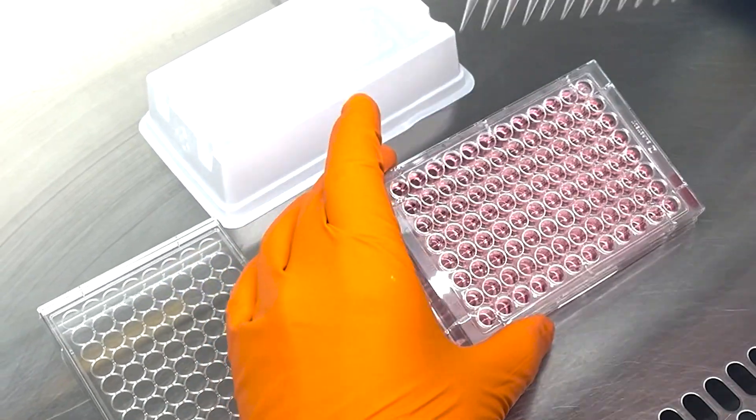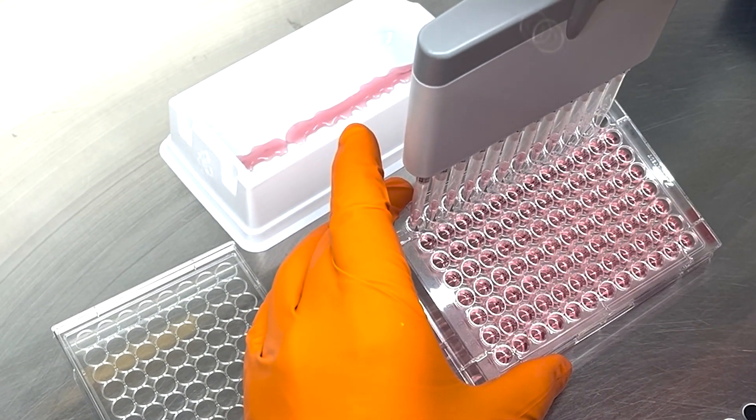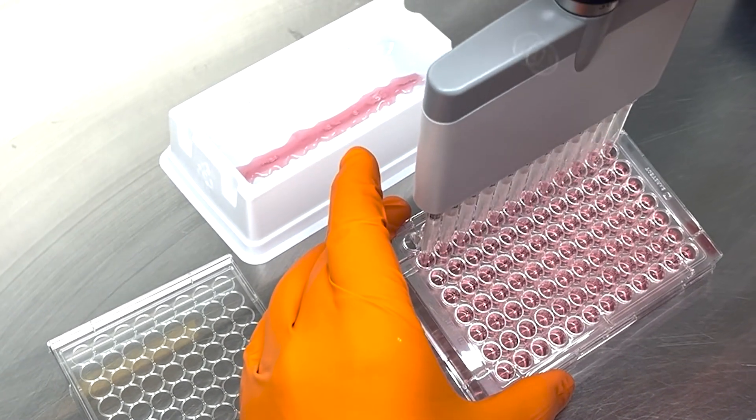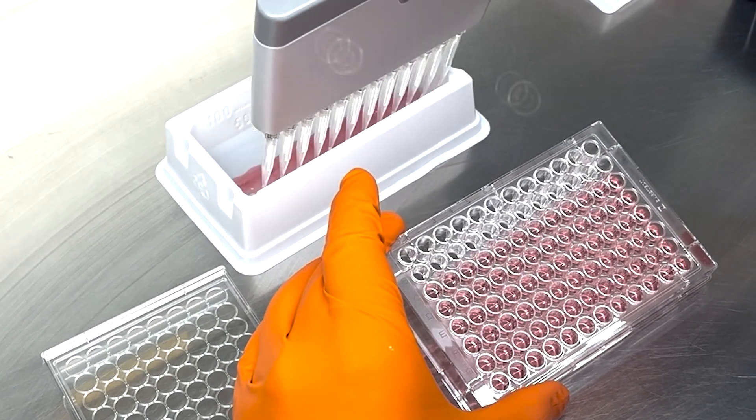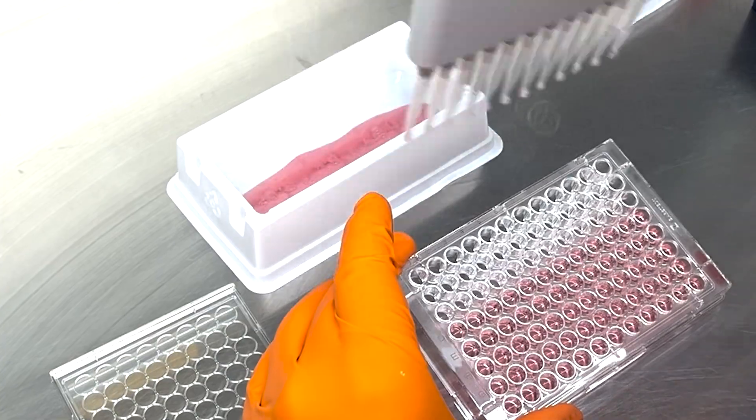First, we gently remove the media from the cells plate. Then, we need to fix the cells to the well of the plate to preserve their current state and stain them with crystal violet to properly visualize them.